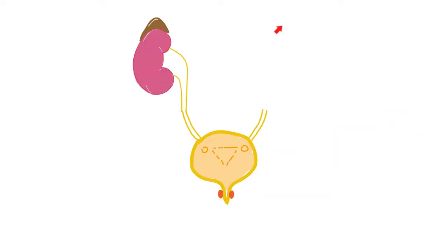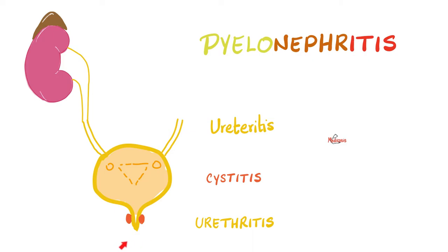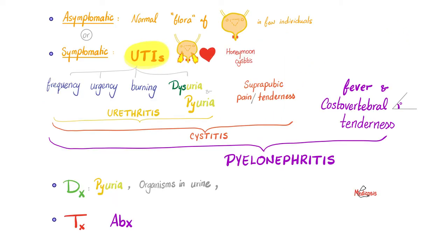This is my kidney — I have two of them, then two ureters, one urinary bladder, and one urethra. If I have bacteria in the urine with no symptoms, it's called asymptomatic bacteriuria. If I have infection of my urethra, it's called urethritis. If I have UTIs in my urinary bladder, it's called cystitis. In my ureter, ureteritis. In my renal pelvis, it's called pyelonephritis — pyelo means pelvis and nephro means kidney, and itis means inflammation. Urinary tract infections could be without symptoms, asymptomatic, or with symptoms, and the symptoms depend on the type of the UTI.